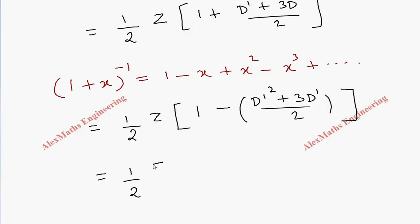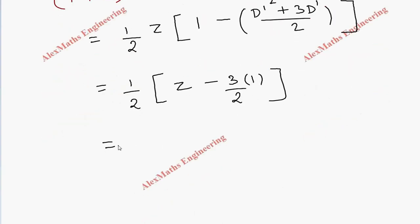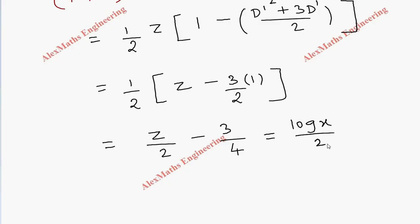Multiplying z inside: the first term gives z/2. When multiplied by D dash squared, double differentiation of z gives 0. The next term is minus 3/2 times D dash acting on z, which is differentiation of z once giving 1, so we get minus 3/4. Therefore the particular integral is z/2 minus 3/4, which in terms of x is log x over 2 minus 3/4.